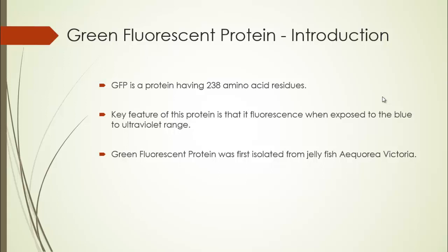GFP is a protein having 238 amino acid residues. The key feature of this protein is that it gives fluorescence when exposed to blue or ultraviolet light. Green fluorescent protein was first isolated from jellyfish.